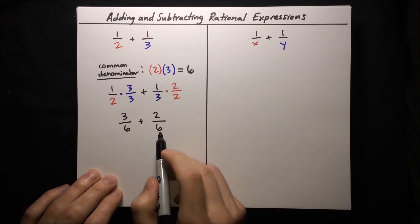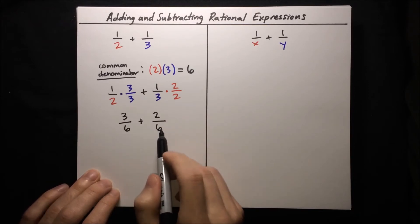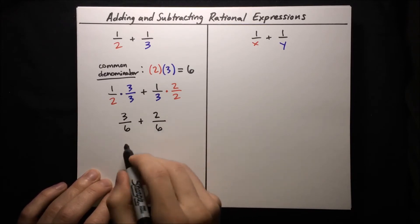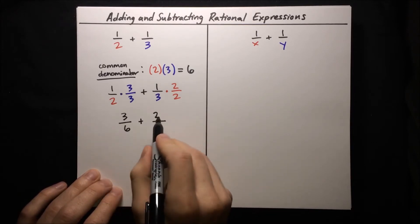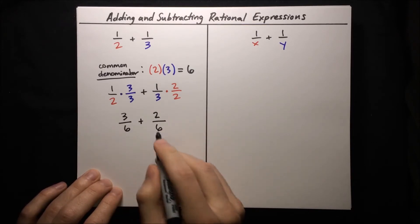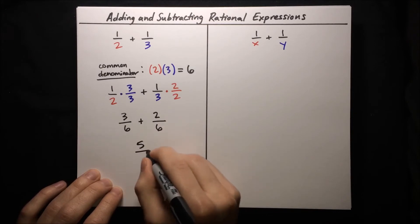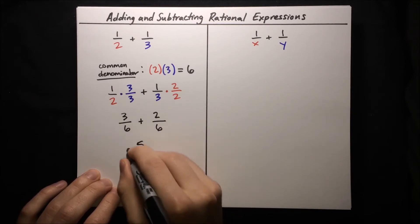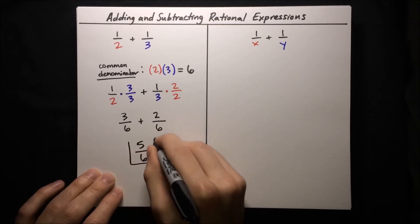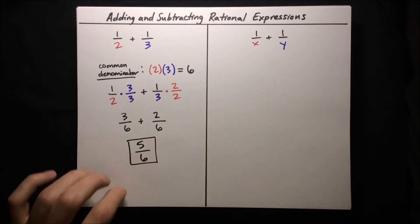We've got our common denominator — now they have the same denominator, so we can just add the numerators. 3 plus 2 is 5, so the answer is 5 over 6.